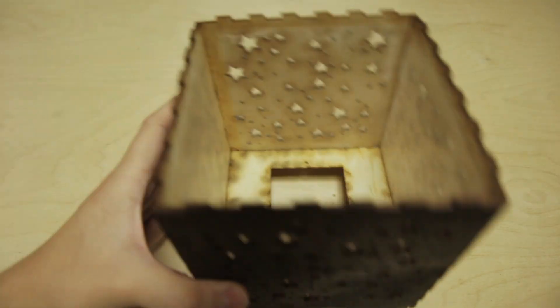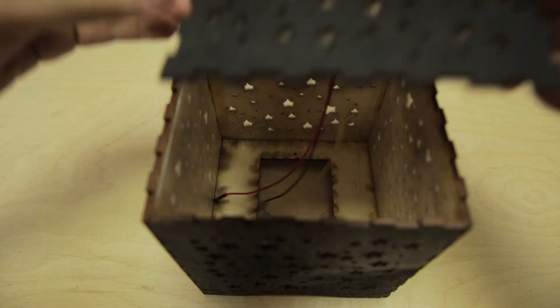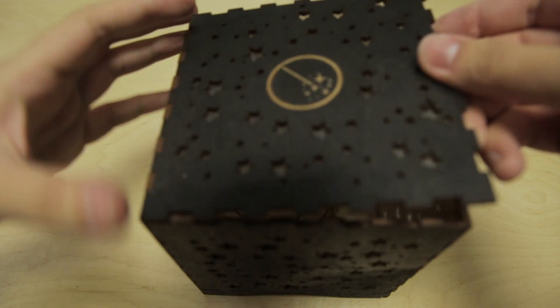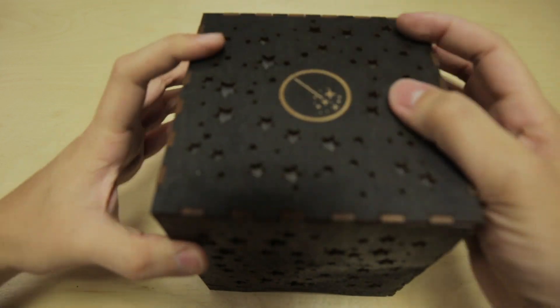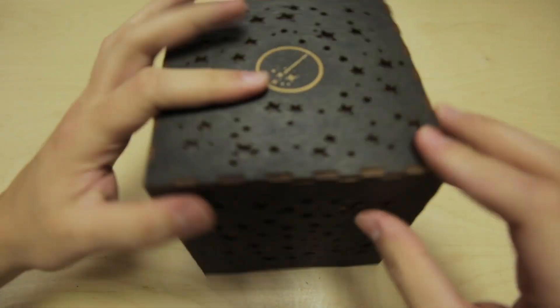Apply glue to all the finger joints on the top ridge of the box and then press the top panel down in place like so. And there's the outer shell assembled.